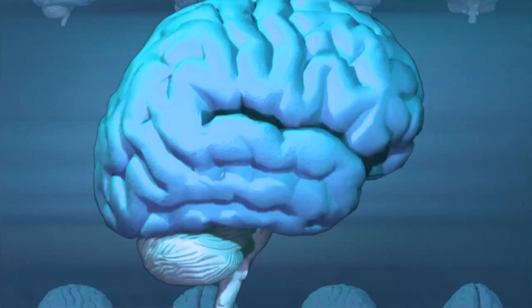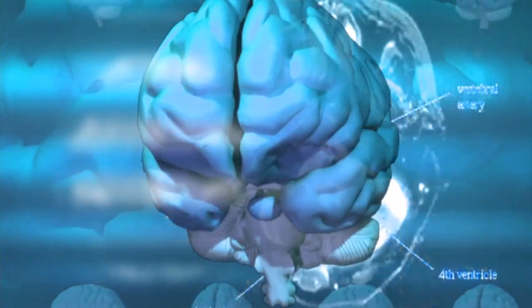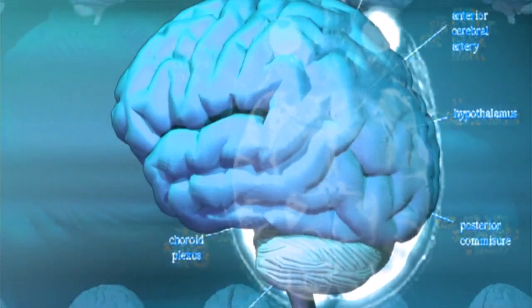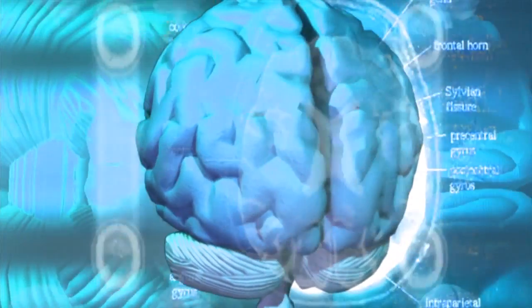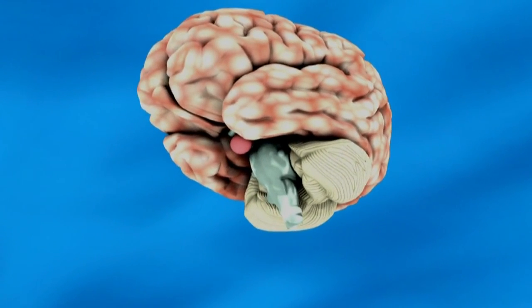Our brain must be super complex and advanced, and yes it is, but I will try my best to give you the basic idea. For starters, we can divide the brain into three parts based on region. The first part is the forebrain or prosencephalon, the second part is the midbrain or mesencephalon, and the third part is the hindbrain or rhombencephalon.